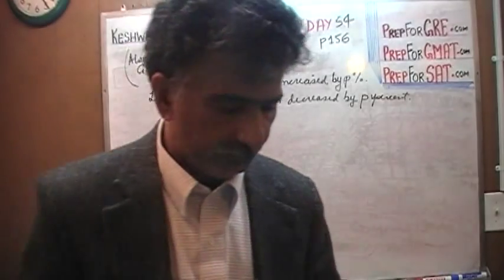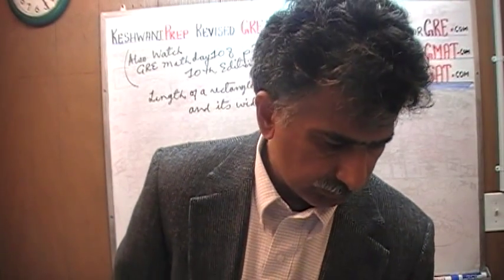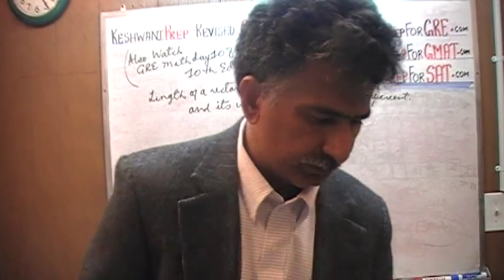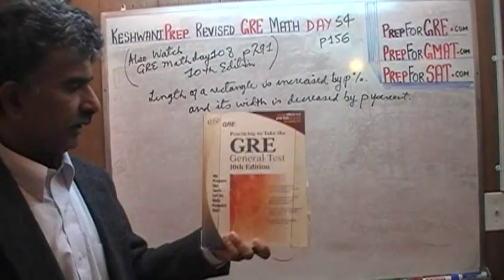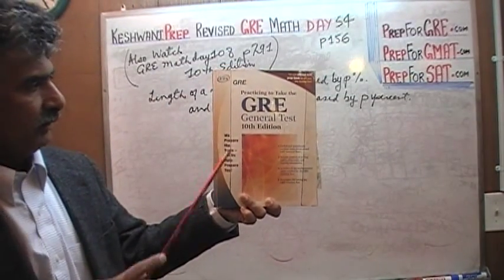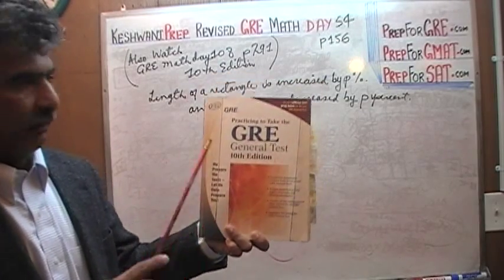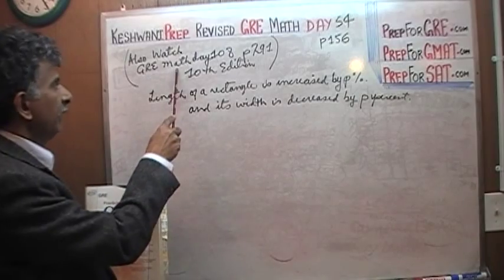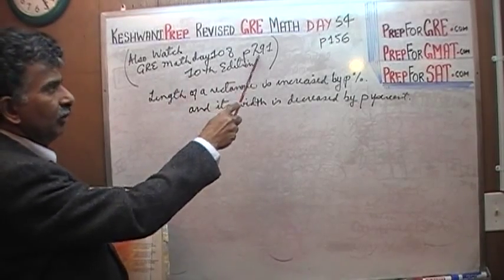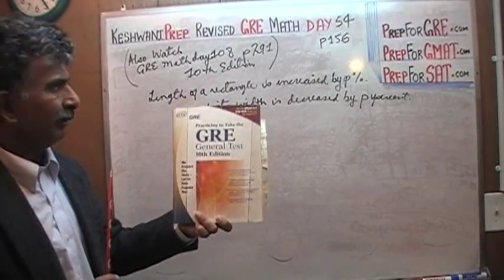This problem is very similar to the problem that appeared in the older version of the GRE, which appears in this book here, Practicing to Take the GRE General Test, 10th edition. In this book, this problem appears on page number 291, page 291.